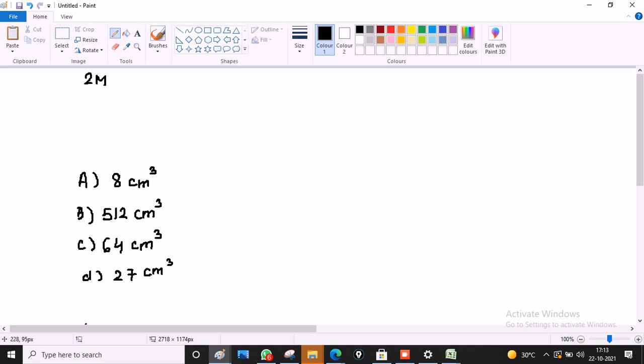Question: The total surface area of cube is 96 cm². What is the volume of the cube?